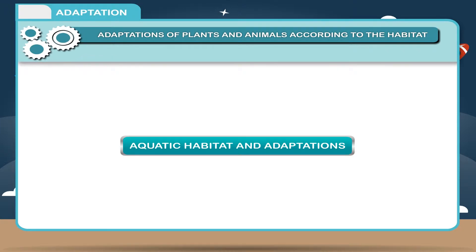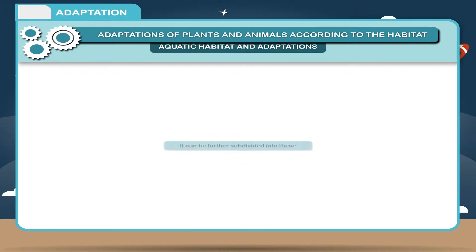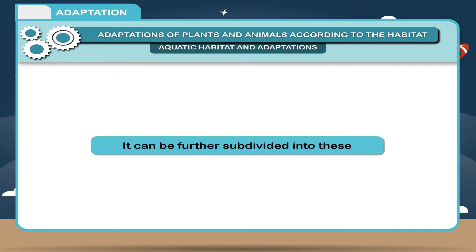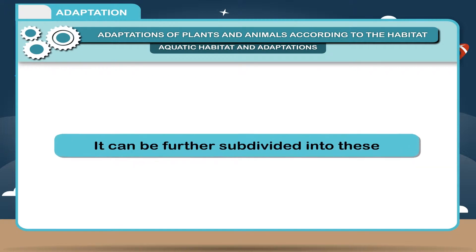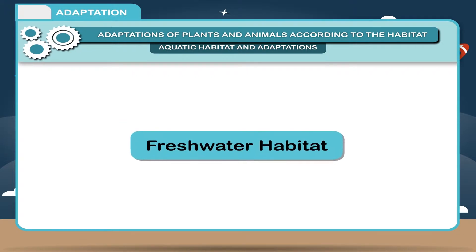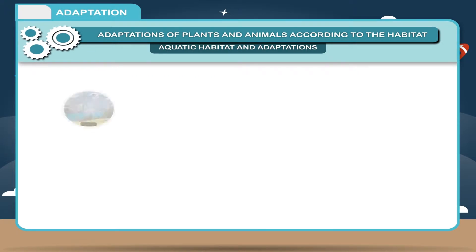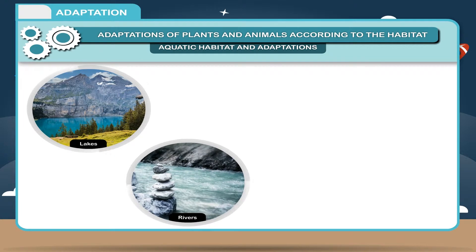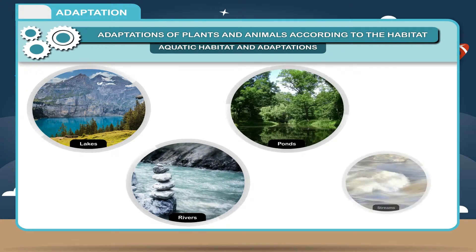Aquatic habitats can be further subdivided into several types. Freshwater Habitat refers to lakes, rivers, ponds and streams.